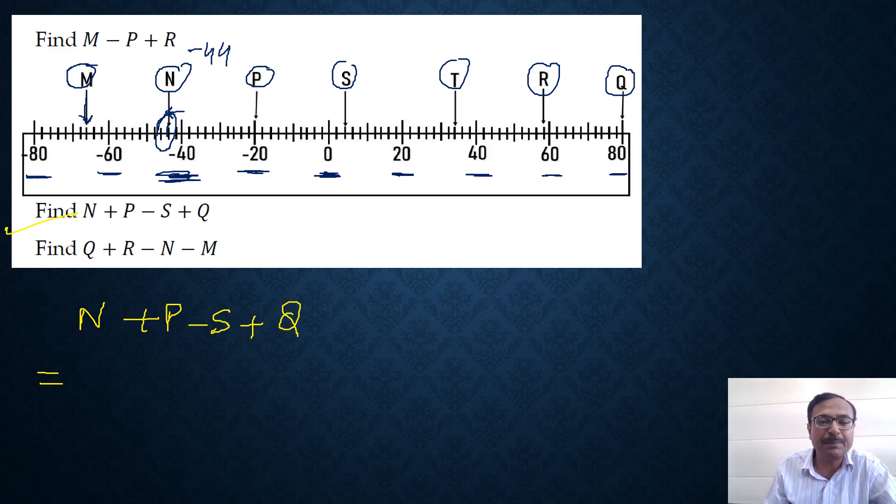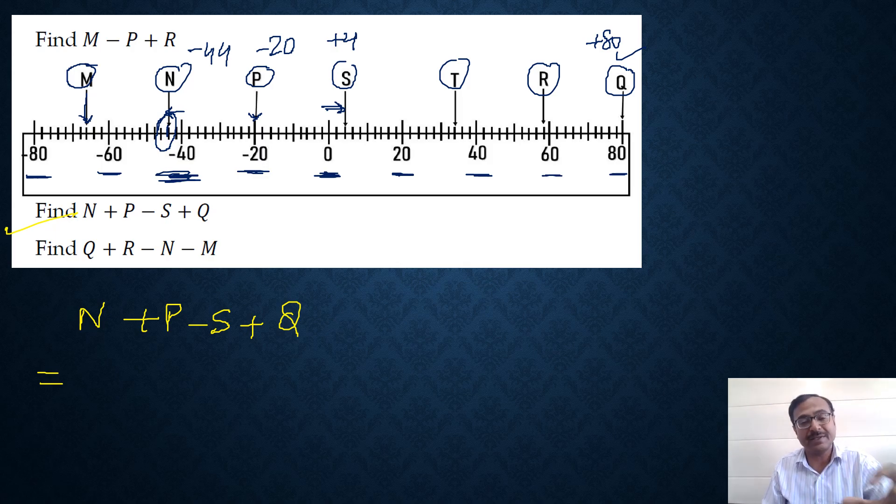Likewise, P exactly corresponds to minus 20 on the scale. S is 2 units on the right side of 0, so 0, 2, 4, that is plus 4. Q is the last one there, so that corresponds to plus 80.